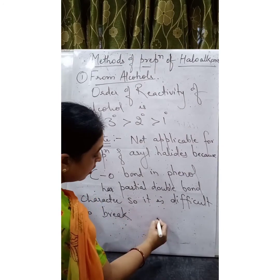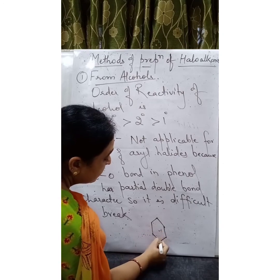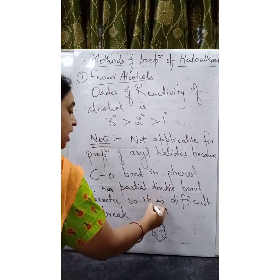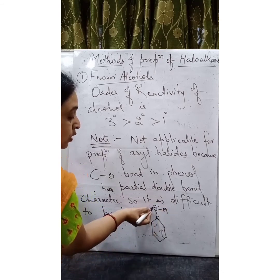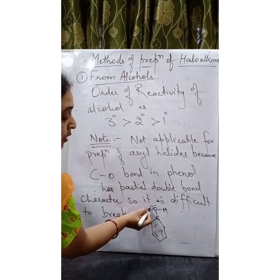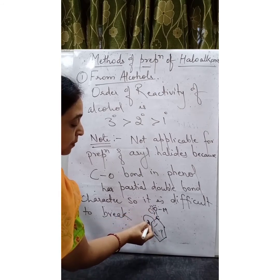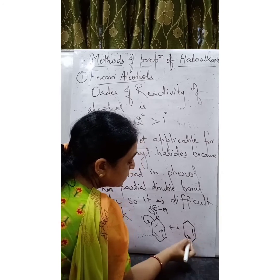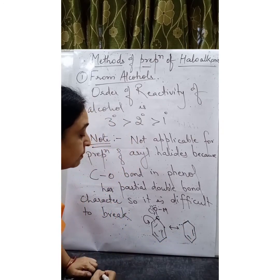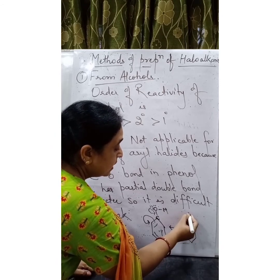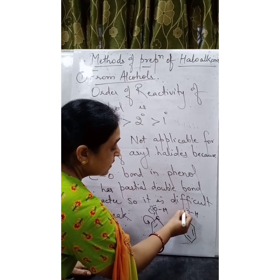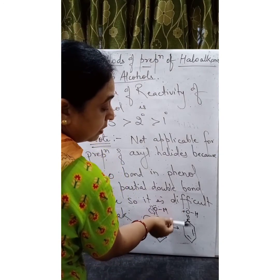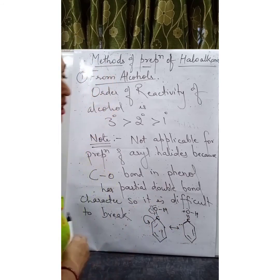To explain: in phenol, the benzene ring has three alternate double bonds with a C-O-H group. The oxygen has a lone pair, which resonance-stabilizes into the benzene ring, forming a double bond and creating partial double bond character in the C-O bond. This results in a C=O type bond where oxygen bears a positive charge due to loss of lone pair. This carbon-oxygen double bond is comparatively difficult to break, which is why aryl halides cannot be prepared this way.